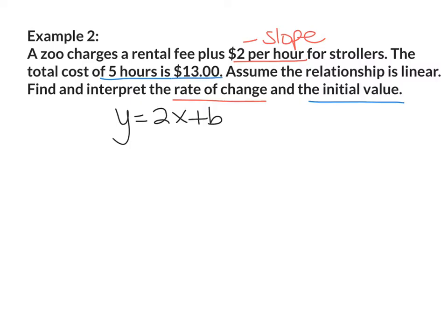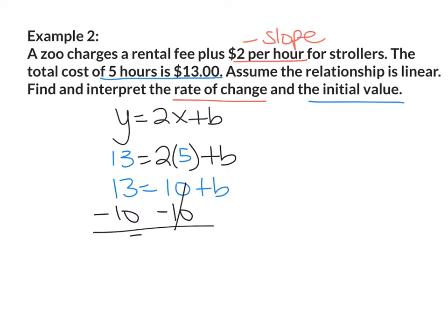We're going to plug in 5 and 13 to find out the final equation. 5 is going to be my x value. 13 is going to be my y value. So y is going to be 13. I'm going to multiply my slope times 5 and then I'm going to bring down b. So I have 13 equals 2 times 5 is 10 plus b. I'm going to subtract 10 from both sides. This side will cancel out. 13 minus 10 is 3 equals b. So the rental fee is the initial fee, which is $3.